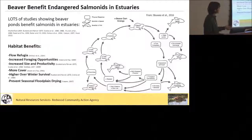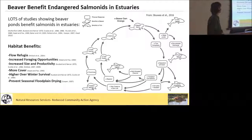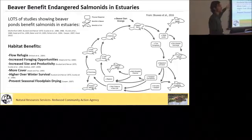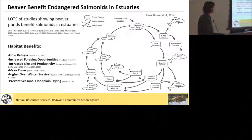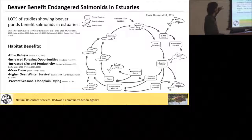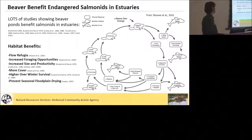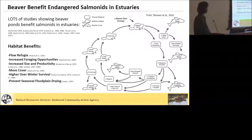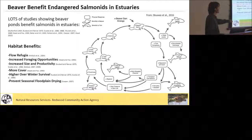Beaver benefit for endangered salmon extends not only to these incised river settings but also in estuaries. There are already a lot of studies dating back to the mid-60s looking at the effects of beaver dams on salmonids, particularly in estuaries. The positive benefits we see include increased flow refugia, increased foraging opportunities, increased size and productivity for coho in particular spending time in beaver ponds relative to not in beaver ponds, more cover, higher overwinter survival, and their dams can prevent seasonal floodplain drying.